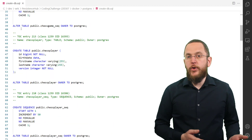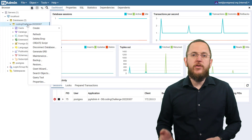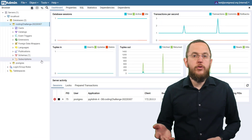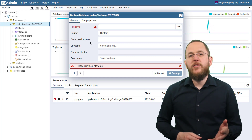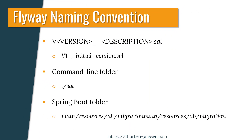The best and easiest way to create this script is to use the backup tools provided by your database — it usually only takes a few clicks or a short command to export the current table structure. Or if you're using Hibernate or any other JPA implementation, you can use its schema export feature. You then need to rename this script to follow Flyway's naming convention, which is: V{version_number}__{description}.sql — for example, V1__initial_version.sql. Copy it to Flyway's migration folder; the command line client uses the folder 'sql' by default, and Spring Boot's Flyway integration expects these files in your project's main/resources/db/migration folder. You can override the default by setting the flyway.locations property in your configuration.